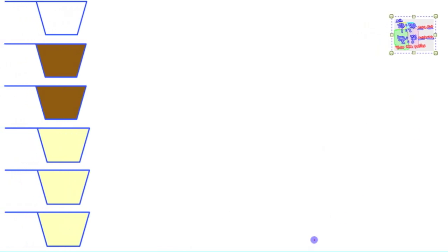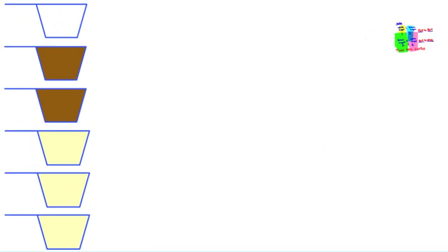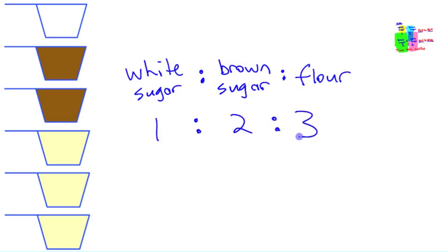If you can compare all three of these things, you could write something for white sugar to brown sugar to flour. We got a one to two to three. One to two to three ratio. This is a three term ratio. Three term ratio. Because there's three terms and you're comparing three things.